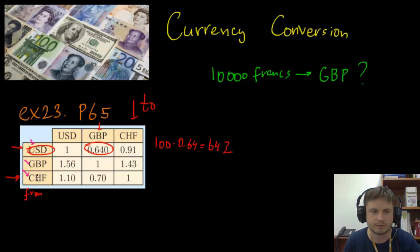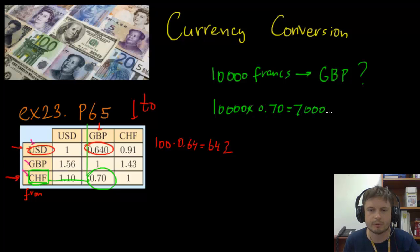Well, we start here again. We start with the money that we have, which is our Swiss francs, and we keep going until we meet British pounds, which is right here. So the value is 0.07. In other words, what we have to do is take our ten thousand francs and multiply it by 0.070, which will give us seven thousand British pounds.